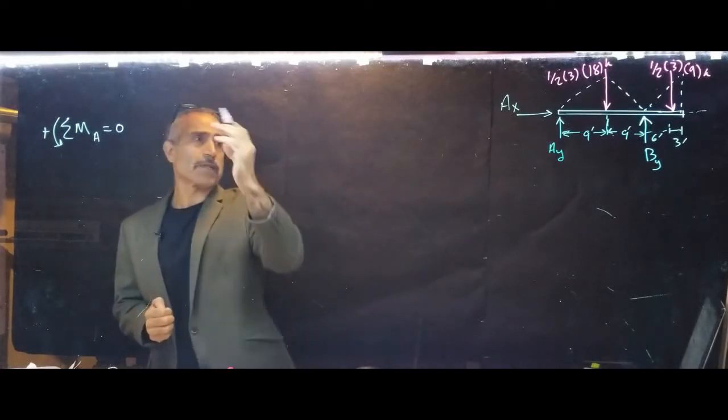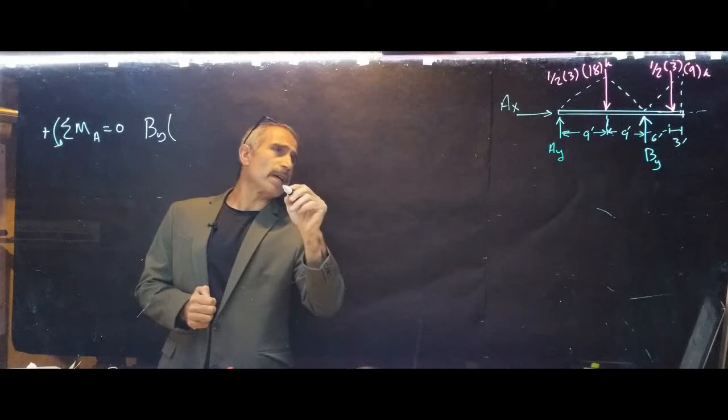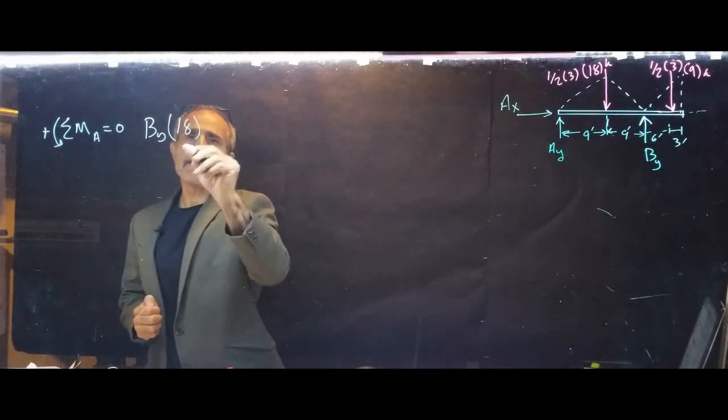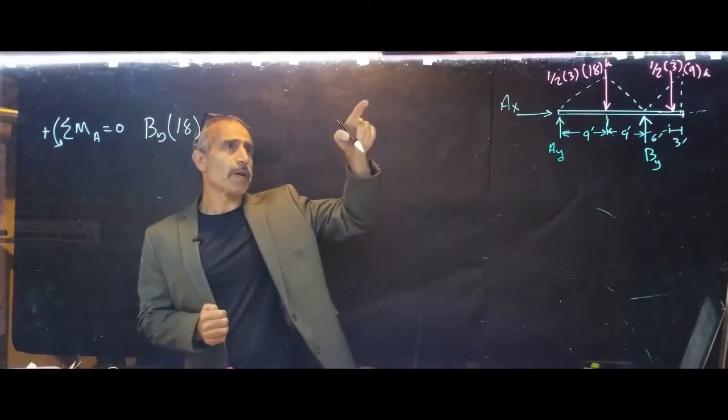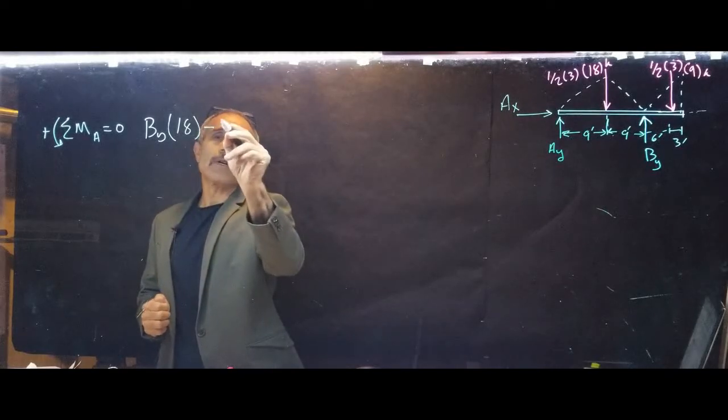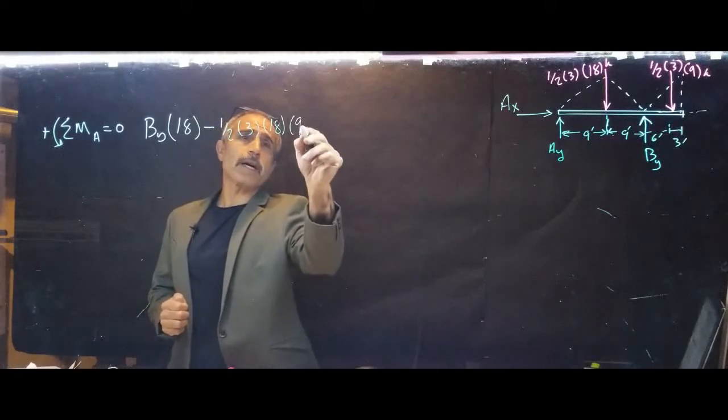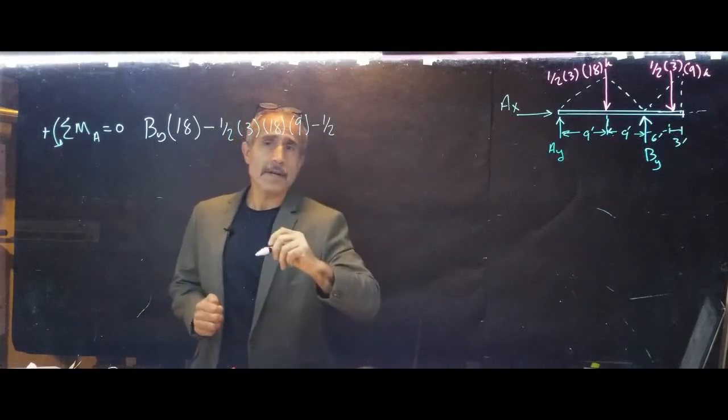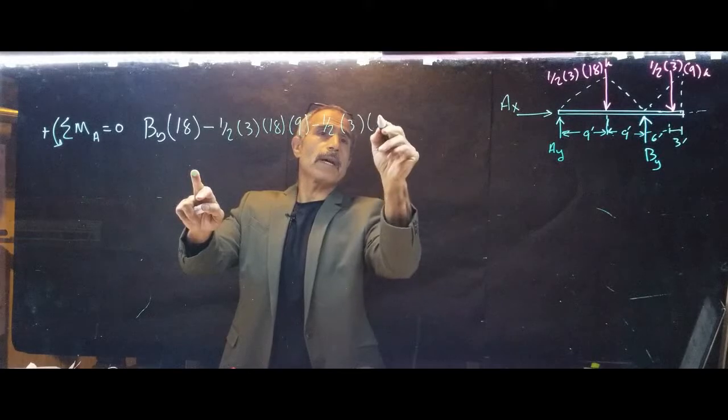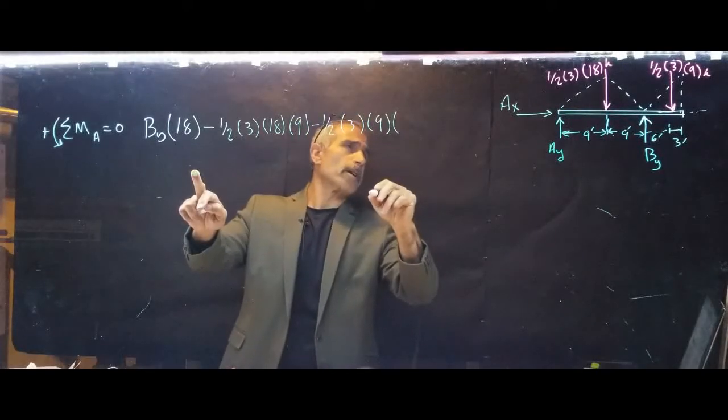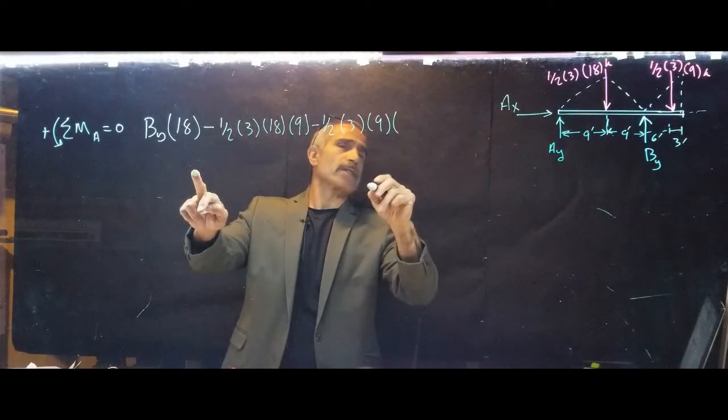By multiplied by 18, and then I'm going to have the other two reaction forces which are going to be negative. So it's going to be minus one half times 3 times 18, times 9, then minus one half times 3 times 9, and that's about... 9 times 18 and 6 is 24.